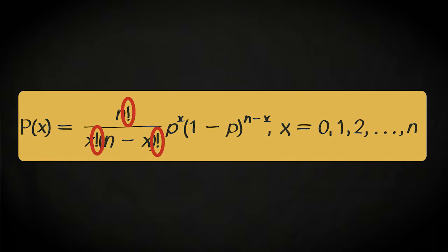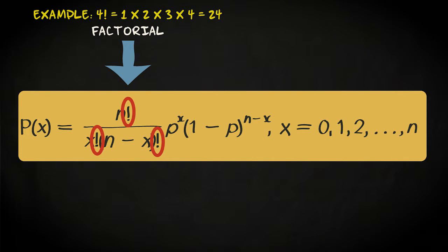This symbol, the exclamation mark, is not very frequently used. It is called factorial and is shorthand for multiplication of all integers up to the number specified. For example, 4! is shorthand for 1 times 2 times 3 times 4.